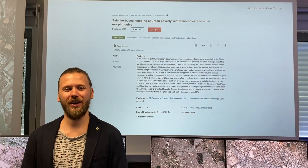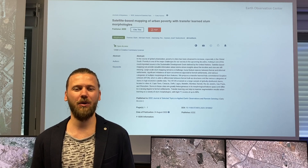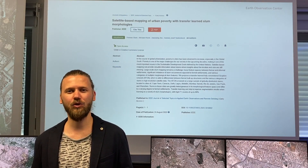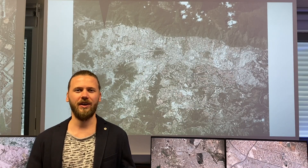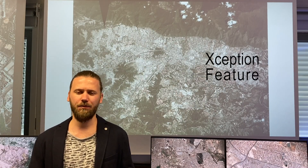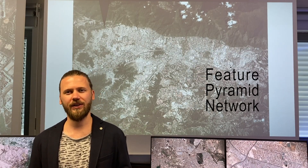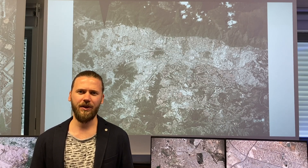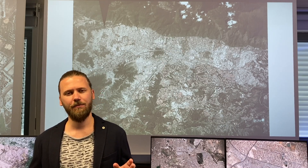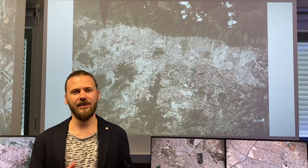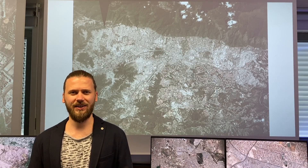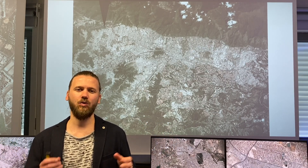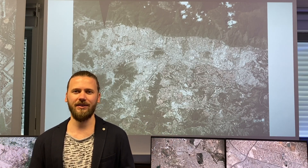Today I would like to share our most recent updates to our deep learning algorithms. We moved away from using a fully convolutional exception network to an exception feature pyramid network (XFPN) that is specifically set up for segmentation. We train our XFPN in a leave-one-out manner, meaning we combine nine cities of the large-scale poverty data set to create one big training data set, and we test our model in the remaining city.